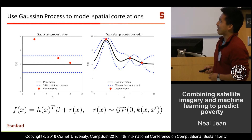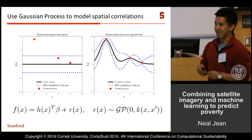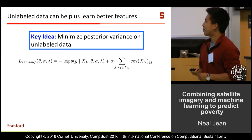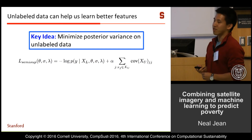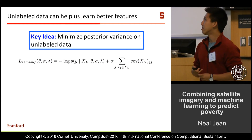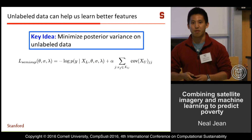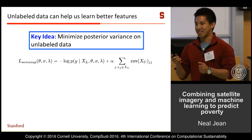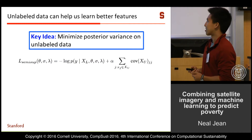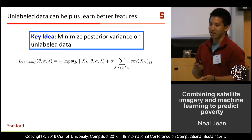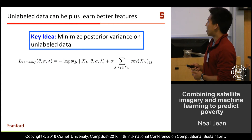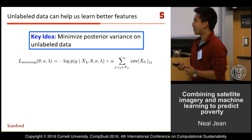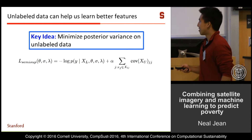By adding the Gaussian process on top, we get some performance improvements, though they're small — we think because we don't have much training data. The next step is to move into a semi-supervised learning regime where we use unlabeled data, which we have a lot of, to help learn a better model. We feed all these unlabeled satellite images into the model so that it learns features useful not just for the training set but for unseen test examples. Instead of just training the Gaussian process to maximize marginal likelihood, we also minimize the posterior variance on unlabeled data to avoid overfitting.